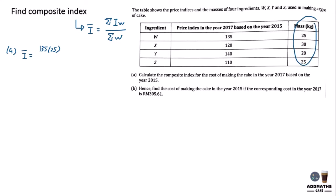And plus 120 times the weightage plus 140 times the weightage plus 110 times the last weightage, and divide by the total weightage. 25, 25, 30 and 20 will give you 100. All these total out will be 100. So by using calculator, add all these values and divide. This will give you 125.25. So this is the composite index.